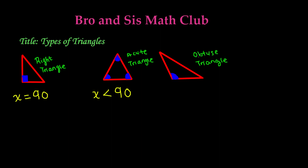Our last triangle in this category is the obtuse triangle. Just like the obtuse angle, the angle has to be more than 90 degrees — it can be 91 degrees or 116 degrees. A key point to remember is that there can only be one obtuse angle in an obtuse triangle. If you have one obtuse angle of 91 degrees and another angle more than 90 degrees, they add up to more than 180 degrees, and any triangle can only add up to 180 degrees. So our first category has right triangle, acute triangle, and obtuse triangle.